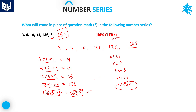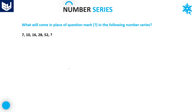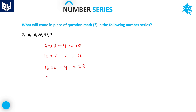Next question. The numbers are: 7, 10, 16, 28, 52, and a question mark. The logic is very simple. If you observe the numbers carefully: 7 × 2 = 14, 14 − 4 = 10. In the same fashion, 10 × 2 = 20, 20 − 4 = 16. After that, 16 × 2 = 32, 32 − 4 = 28.